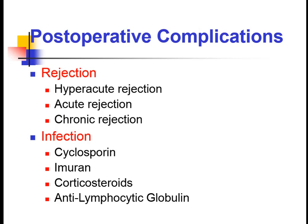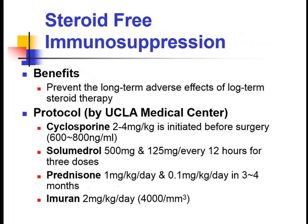Heart transplantation complications include pre-acute rejection and chronic rejection. Medical management involves corticosteroid suppression and steroid immunosuppression, which helps prevent the long-term adverse effects of long-term steroid therapy. Protocols used include cyclosporine, solumedrol, and prednisolone steroid medicines.